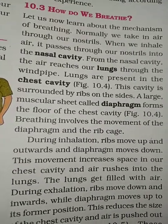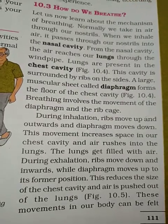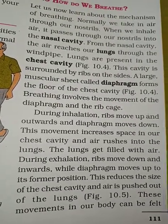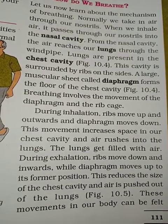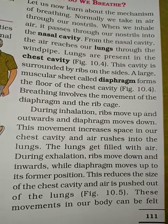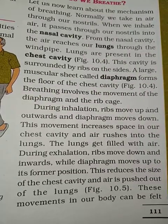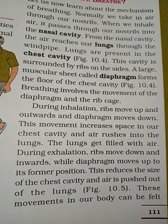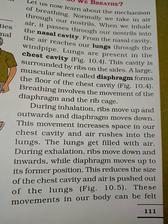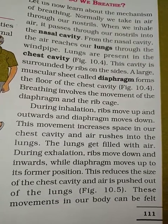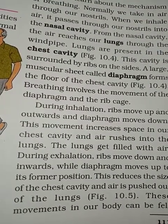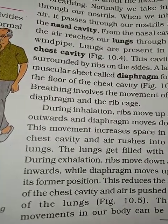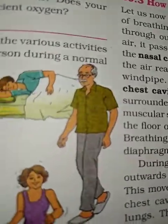During inhalation, ribs move up and outwards and the diaphragm moves down. This movement increases the space in our chest cavity and air rushes into the lungs — the lungs get filled with air. During exhalation, ribs move down and inwards, and the diaphragm moves up to its former position. This reduces the size of the chest cavity and air is pushed out of the lungs. These movements in our body can be felt when we breathe.